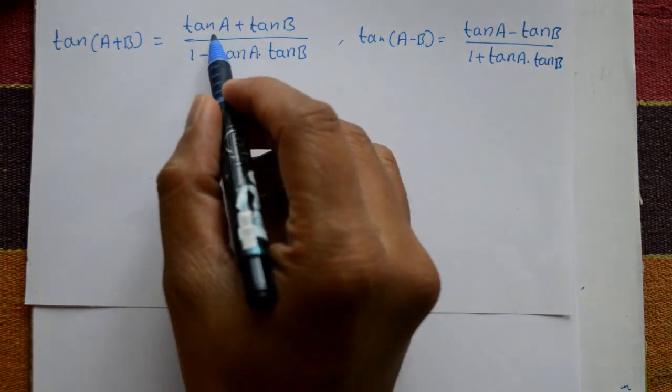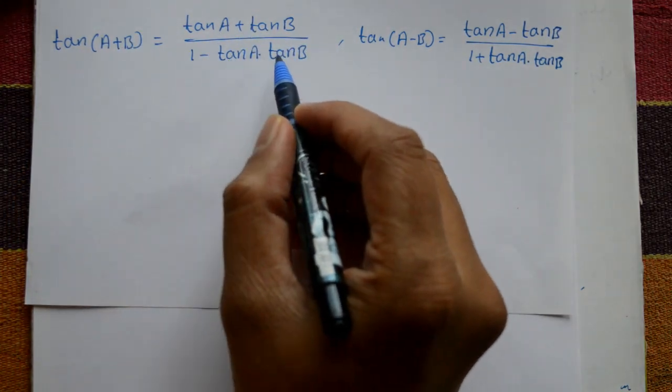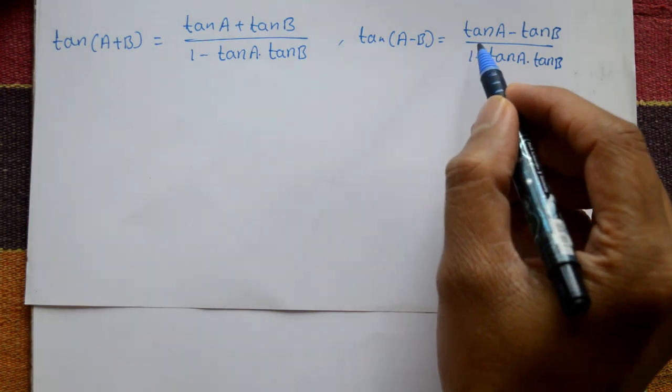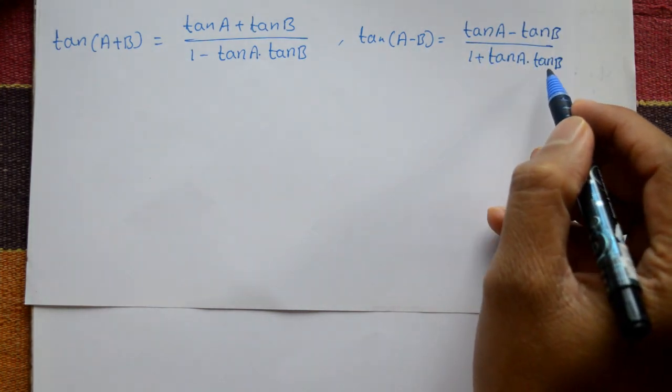tan(a+b) is equal to tan a plus tan b upon 1 minus tan a into tan b. tan(a-b) is equal to tan a minus tan b upon 1 plus tan a into tan b.